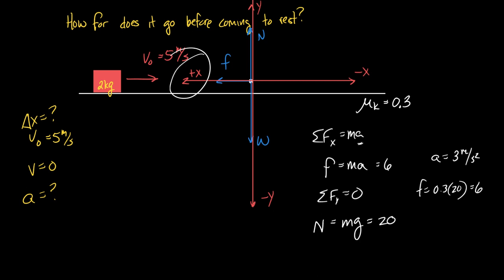So, make the 5 negative. My acceleration is 3. I think now you have enough information to figure out the displacement.